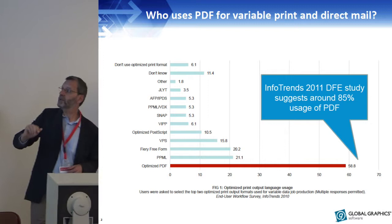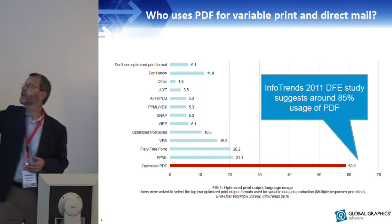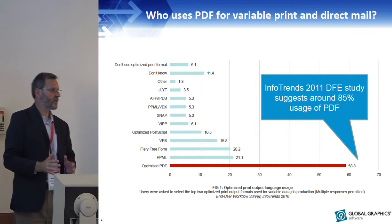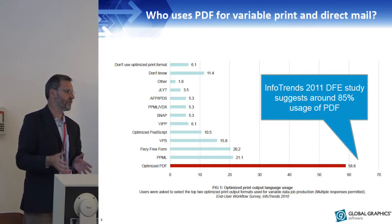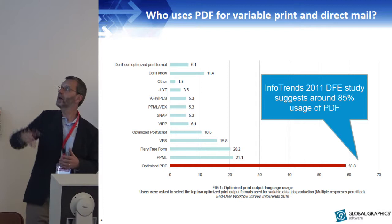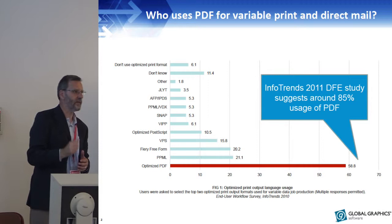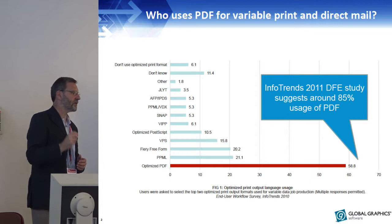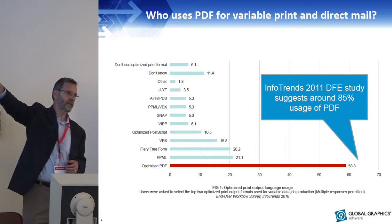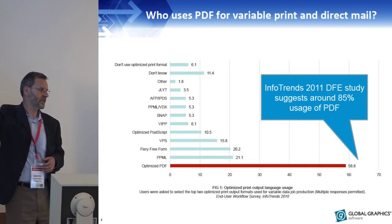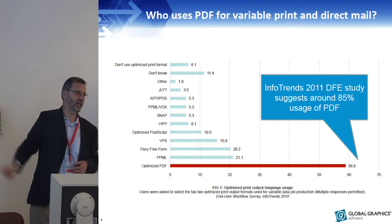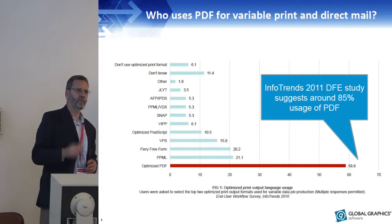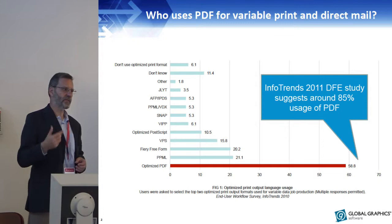Back in 2010, nearly 60% of print service providers said they were using PDF for variable data print. In 2011, they did a similar survey looking at different DFEs — digital front ends on production presses — and it was up to 85%. So you can very clearly make the claim that PDF is the dominant data delivery format for variable data print. There is no PDF/VT on this list because the surveys were done in 2010-2011, and PDF/VT was only published in 2010. The first implementations were shown at IPEX in 2010, but there wasn't really any adoption that early.